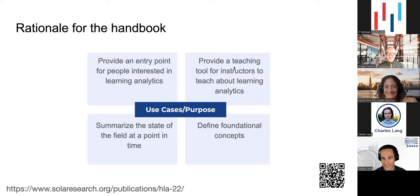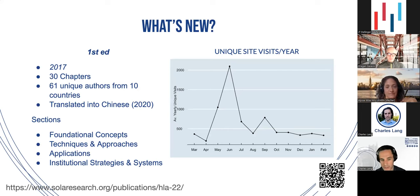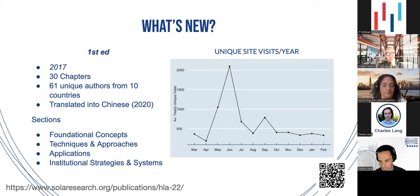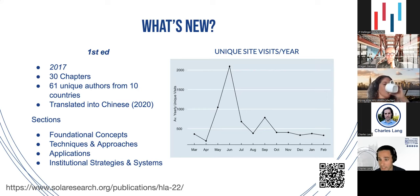The first edition came out in 2017 with 30 chapters and 61 unique authors from 10 countries, and it has since been translated into Chinese. The sections for the first edition were foundational concepts, techniques and approaches — which were methodological ideas — applications, and then institutional strategies and systems. Institutional strategies covered processes and data responsibility within institutions, while applications covered things like intelligent tutoring systems or what happens when a particular dashboard is used in a particular place.